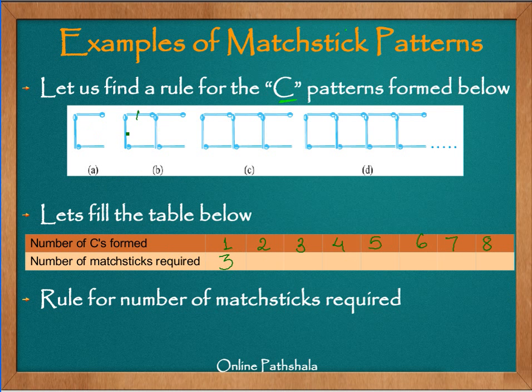You can see this is 1, 2, 3, 4, 5, and 6. So we need 6 matchsticks in this case. Then for when we have 3 Cs, we count 1, 2, 3, 4, 5, 6, 7, 8, and 9. So for 3 Cs to be formed, we need 9 matchsticks. And for 4, which is figure D here, we have 1, 2, 3, 4, 5, 6, 7, 8, 9, 10, 11, and 12.